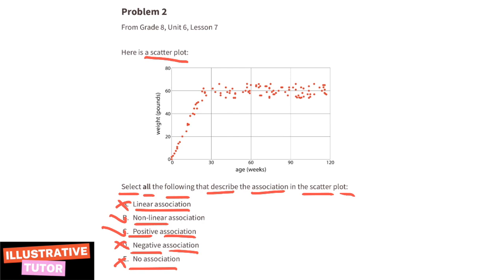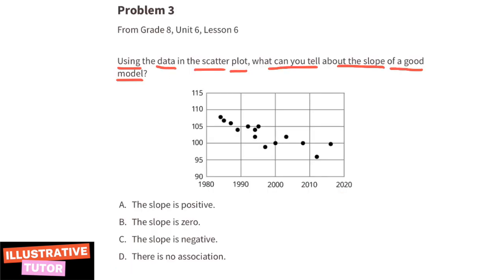Problem number three, from eighth grade unit six lesson six: using the data in the scatter plot, what can you tell about the slope of a good model? Part a: the slope is positive. The data in this scatter plot shows the slope is going to be negative, because it starts out high and goes low. A positive slope would start out low and go high.